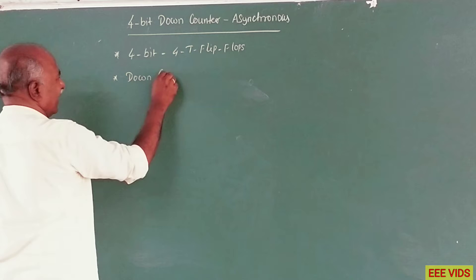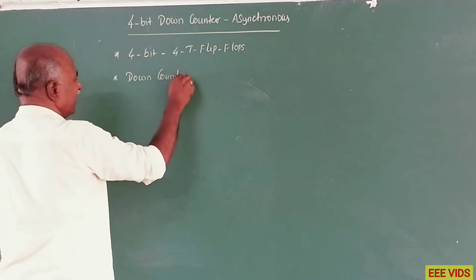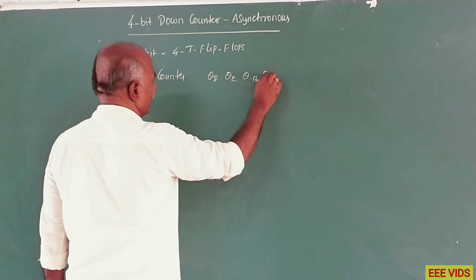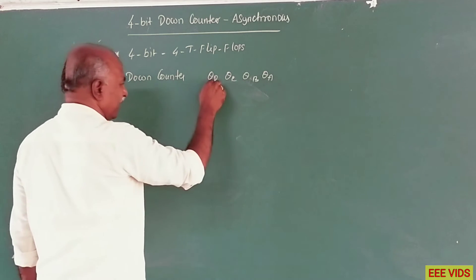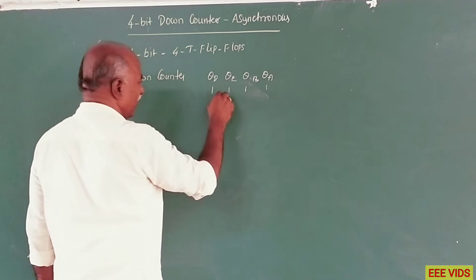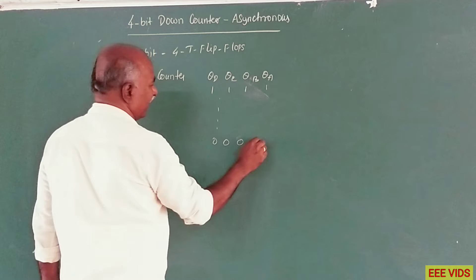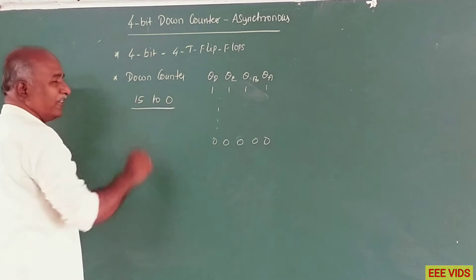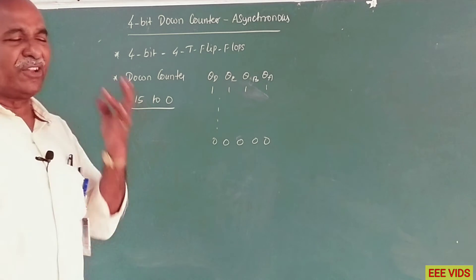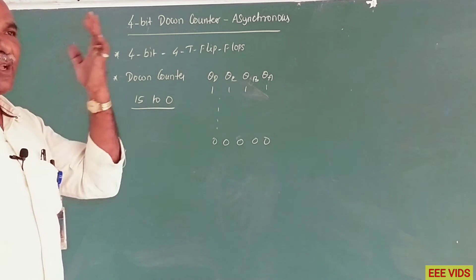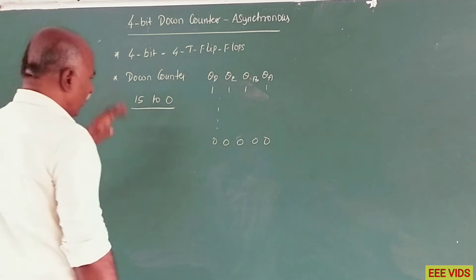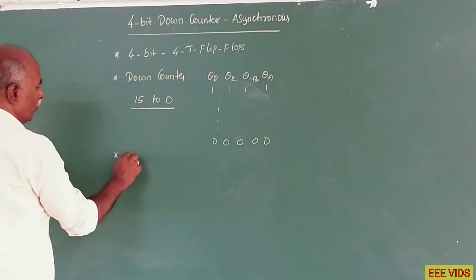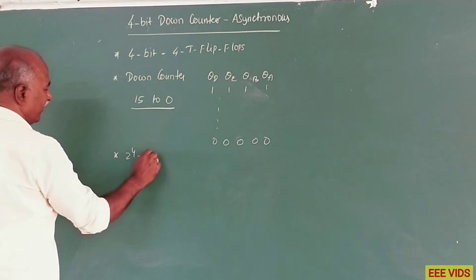The down counter counts in decreasing order on outputs QD, QC, QB, QA — counting from 15 to 0 in descending order. The initial state is 1111. After maximum counting of 2 power 4, which is equal to 16 pulses, the count resets.